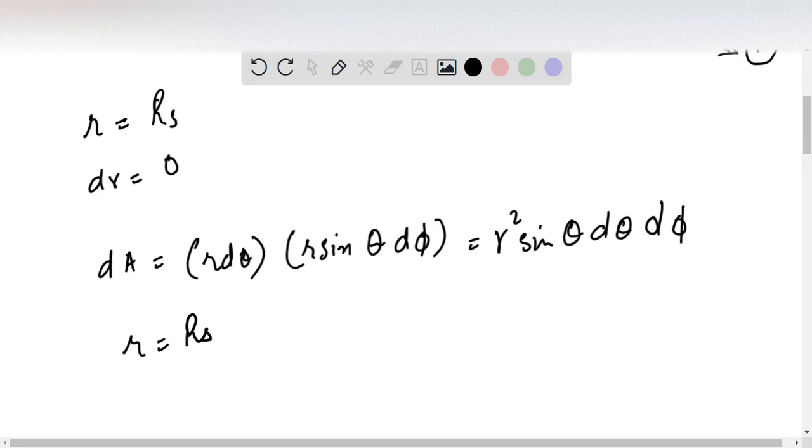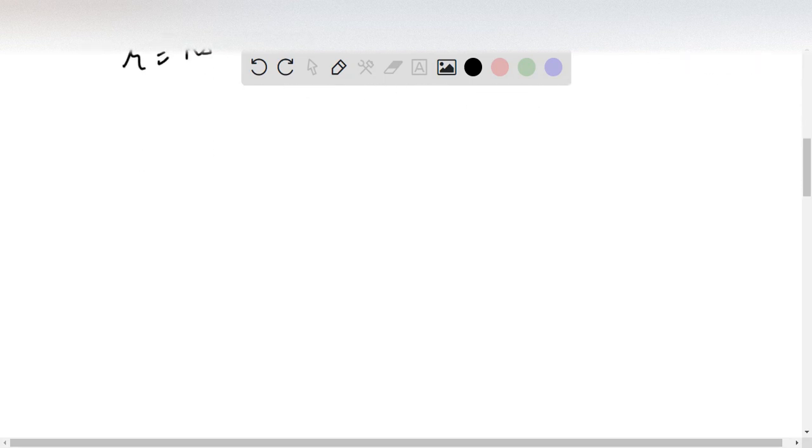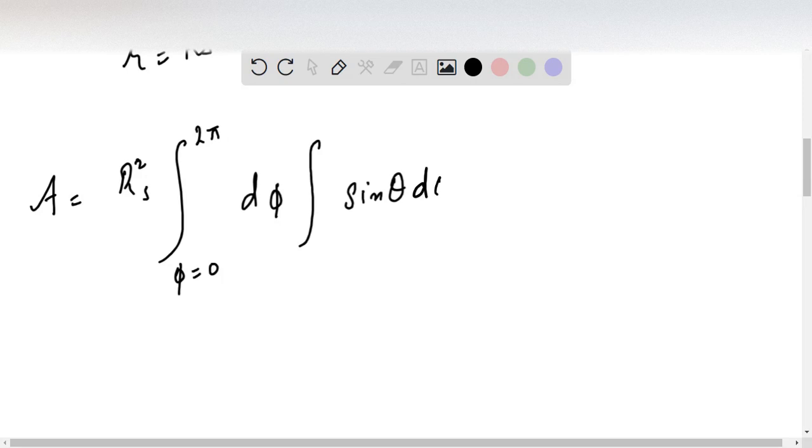And integrate expression number 2 for standard spherical angles phi and theta. So A is equal to Rs square, and integration from phi equals 0 to 2 pi of d phi, and integral of sine theta d theta with range 0 to pi.